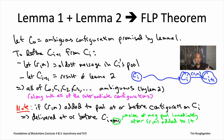That concludes this part of the argument. We have not yet proved lemma two — it is not at all obvious, but it is true. Given that lemma one is proved and lemma two is assumed, the FLP impossibility result follows. The only remaining task is proving lemma two — exhibiting intermediate delivery sequences that guarantee ambiguity after delivery of a target message. We will prove lemma two in the next video.